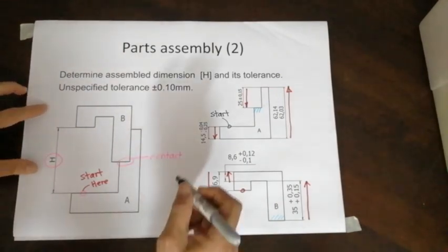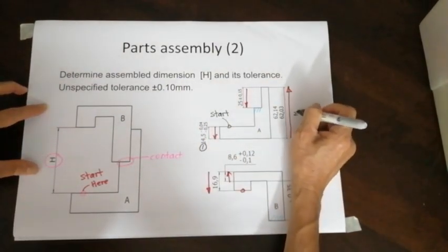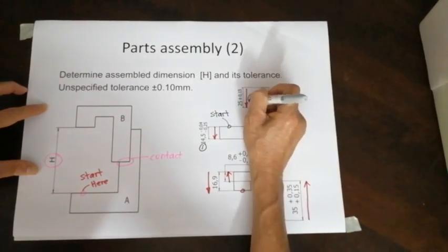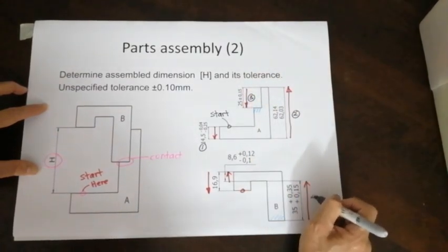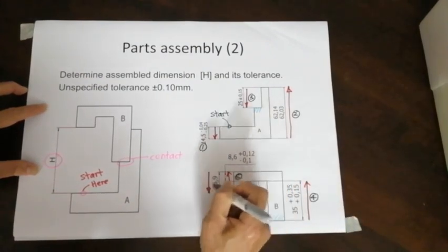Let me name the dimensions. The first one. Second. Third. And from here, we got the fourth. The fifth. And the sixth.